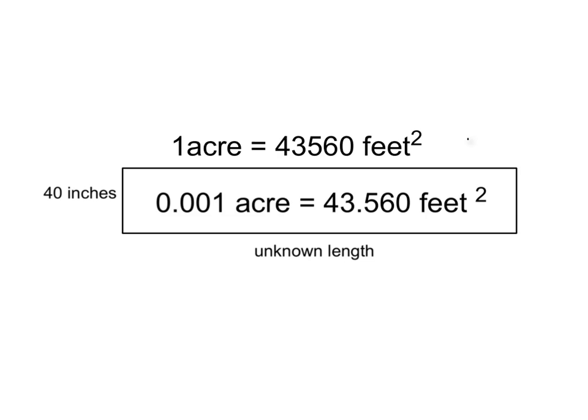Let's do some math. We know that one acre is 43,560 square feet. Consequently, one one-thousandth of an acre will be 43.560 square feet. So, if we can imagine a long, thin rectangle that contains one row of corn, we can see that that rectangle would be 40 inches wide and of an unknown length.